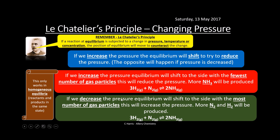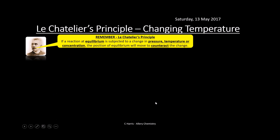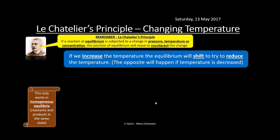If we decrease the pressure, equilibrium shifts to the side with the most gas particles to try to increase the pressure, so more nitrogen and hydrogen are produced.